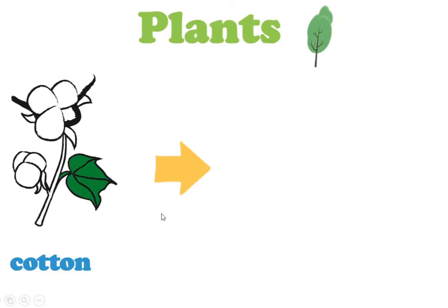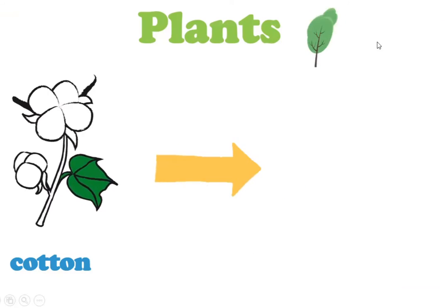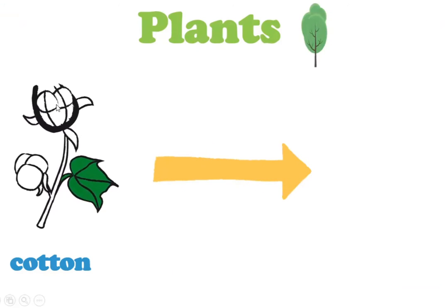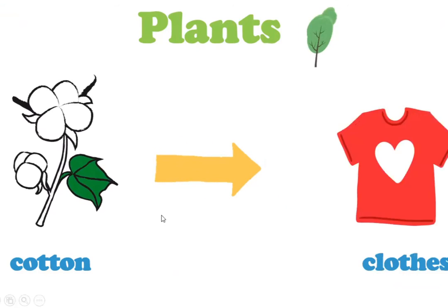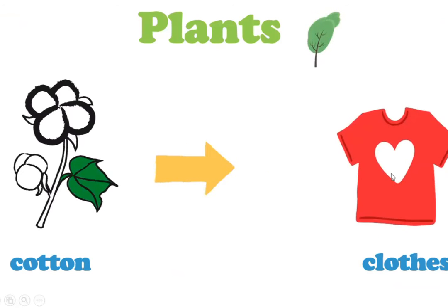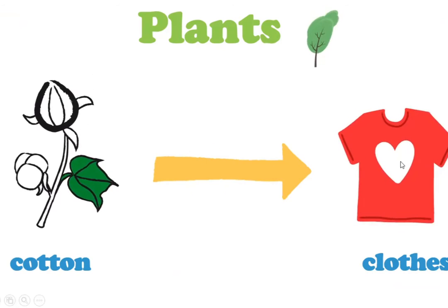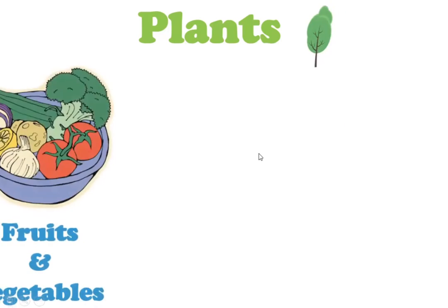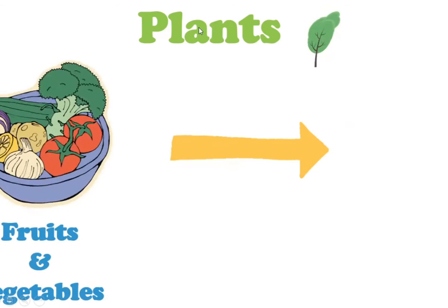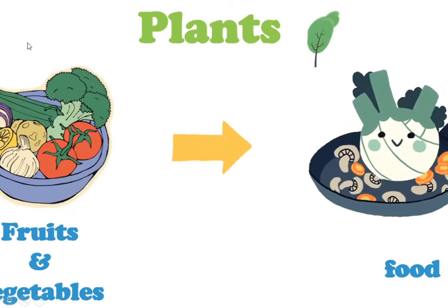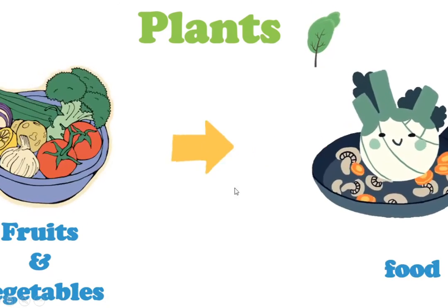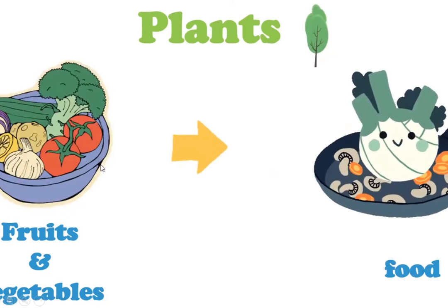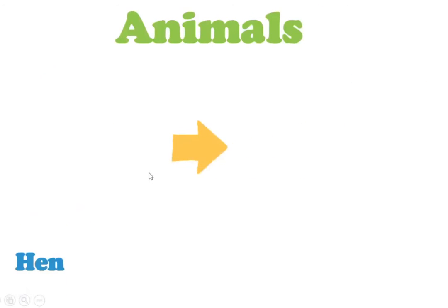The third natural resource is plants. We use cotton, which is a kind of plant, to make clothes to wear — like t-shirts, socks, and pants. We also get fruits and vegetables from plants. We make food by cooking fruits and vegetables. For example, the tomato — we make ketchup from it, and all of us like ketchup.